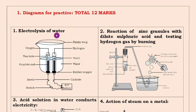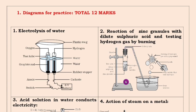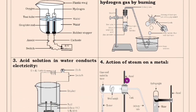The first one is electrolysis of water. Here is the diagram and the labels. All the labeling you have to learn because for the exam they are going to ask 2 to 3 labels. The second one is reaction of zinc granules with dilute sulfuric acid and testing hydrogen gas by burning. This diagram is also important. Many times they are asking this diagram, so you have to learn it.